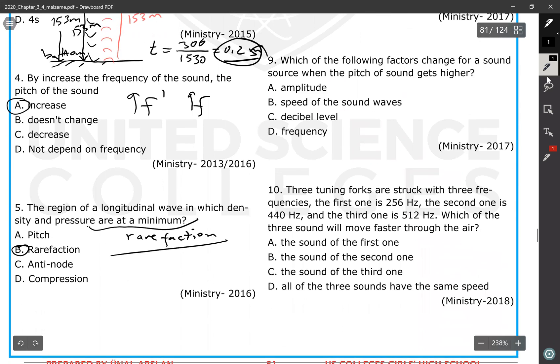Question number nine: which of the following factors change for a sound source when the pitch of the sound gets higher? If pitch increases, which means frequency must increase. So pitch and frequency are directly proportional - the frequency of the source increases, pitch detected by the ear also increases.